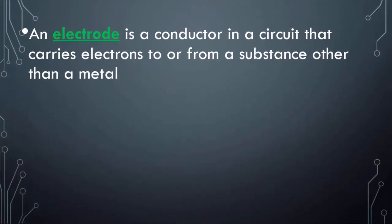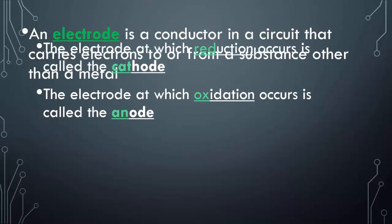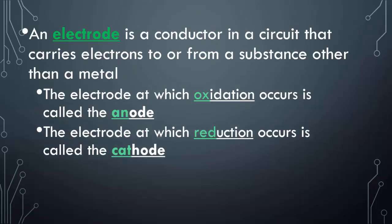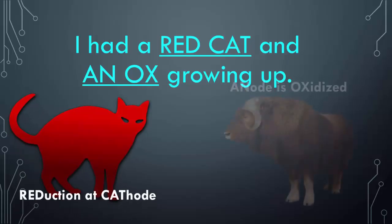An electrode is a conductor in a circuit that carries electrons to or from a substance other than a metal. The electrode at which oxidation occurs is called the anode, and the electrode at which reduction occurs is called the cathode. A helpful mnemonic is 'red cat and an ox' — reduction at cathode, oxidation at anode.